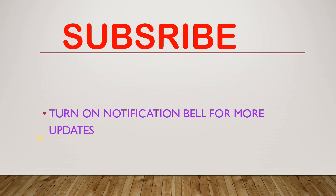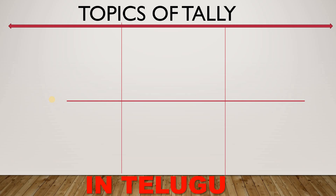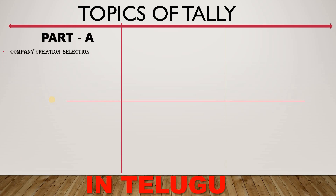I will divide the topics into three parts so that it's easy to understand. Part 1 is company creation and selection — this is where we create a company and give it a name.